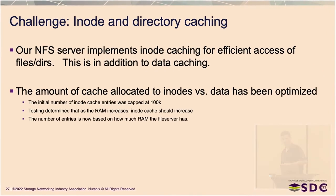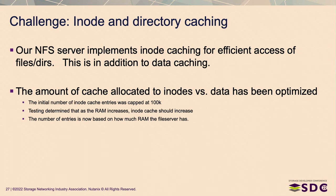A second NFS challenge: for workloads with millions of files and directories, we have a separate inode cache in the NFS layer. When we first implemented it, only 100,000 entries were set aside. With millions of files, this wasn't enough. We implemented a change so that instead of a fixed cap, the inode cache size scales with RAM — as you add RAM to your file server, the cache grows proportionally, and the cache timeout increases so entries stay cached longer. Once we could cache millions of files, performance improved quite a bit — and this was driven by a specific customer situation.